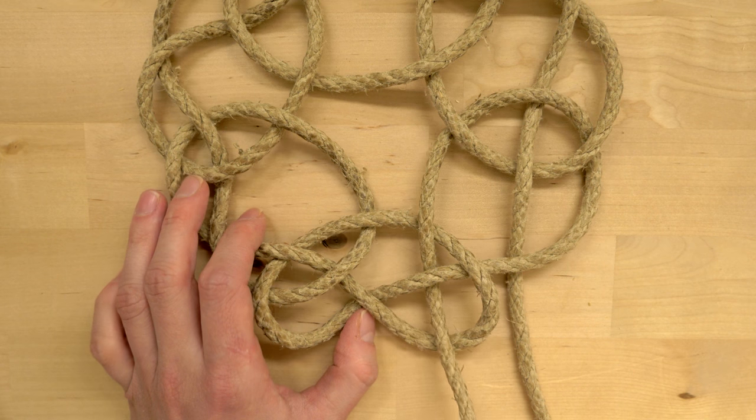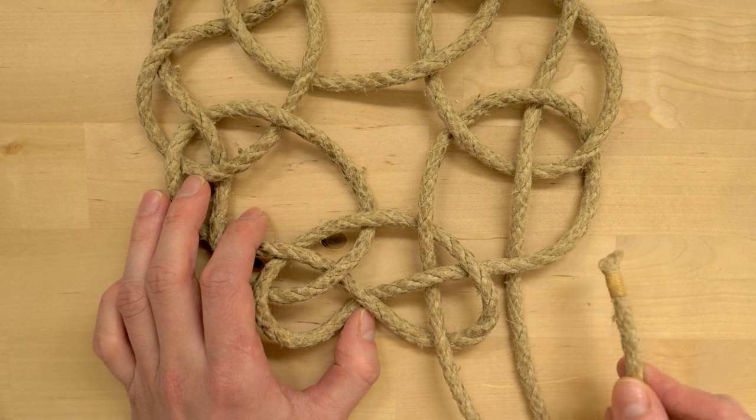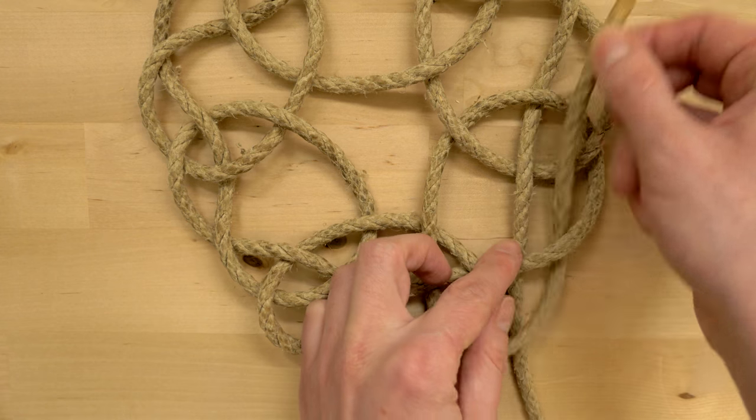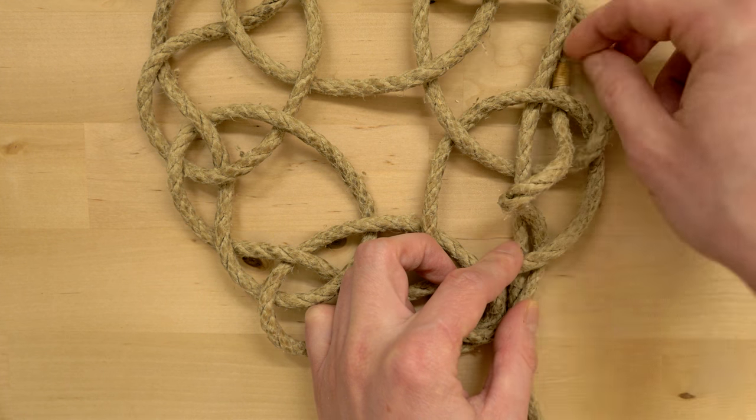The last thing we need to do is place our working end next to the standing end on its right side. This basically completes one pass of our Kringle mat.